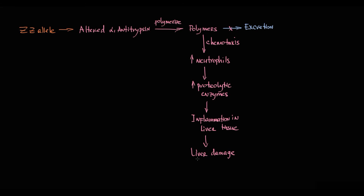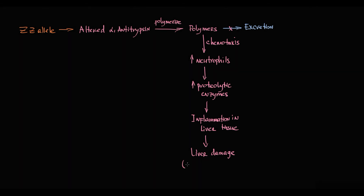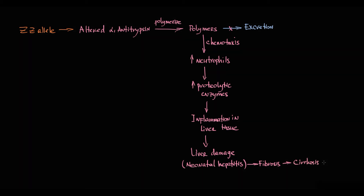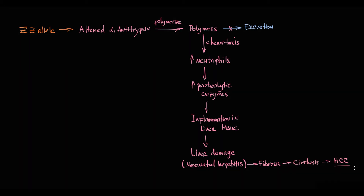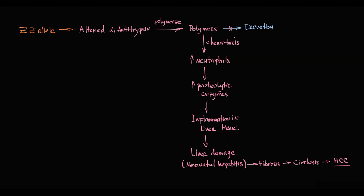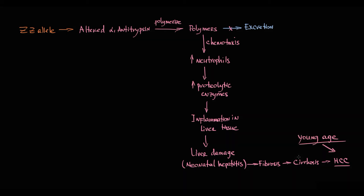Because of that, this condition is called neonatal hepatitis. Where there is inflammation, there is fibrosis, which over time progresses to cirrhosis. Cirrhosis markedly increases the risk of hepatocellular carcinoma, so patients with the ZZ allele can develop cirrhosis or hepatocellular carcinoma at a very young age.